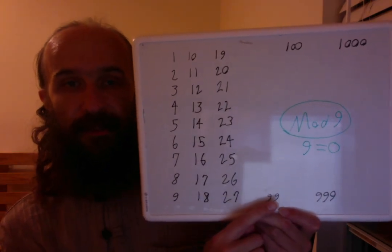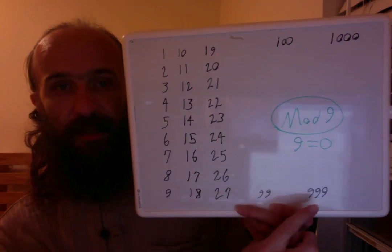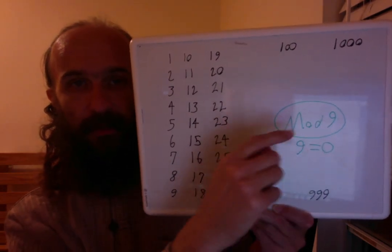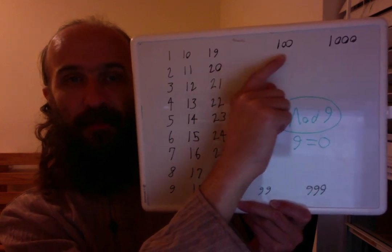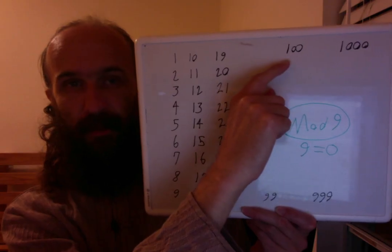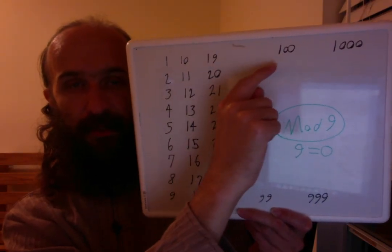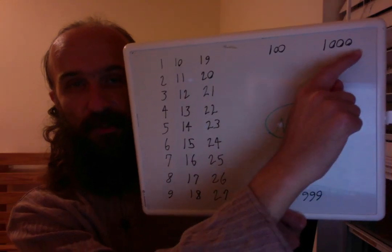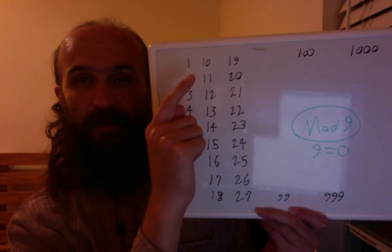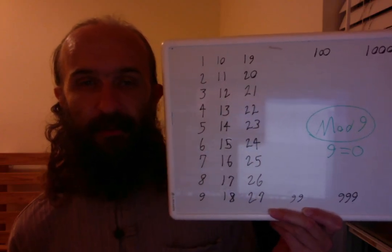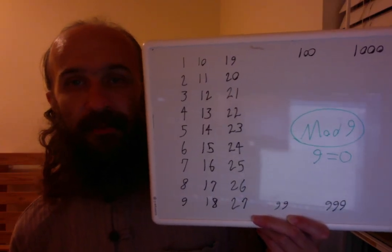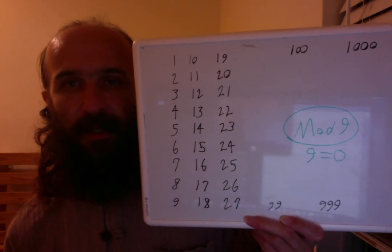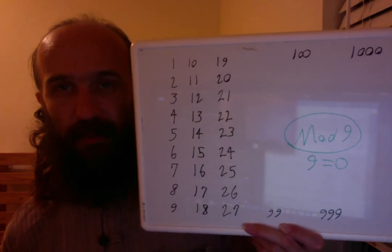We can look at 99: 9 plus 9 is 18 — it's in the correct row. 999 adds up to 27, also in the correct row. And if we look at these numbers which go from 99 to 100, well that's going to be 1 mod 9. It's just 1 plus a bunch of zeros — all of these numbers adding a new digit, 1 plus zeros, always give a digital sum of 1. So this will not work for any other modulus, except it actually works for 3 as well. In mod 3, we can also use the digital sum, and that works because 3 times 3 equals 9.